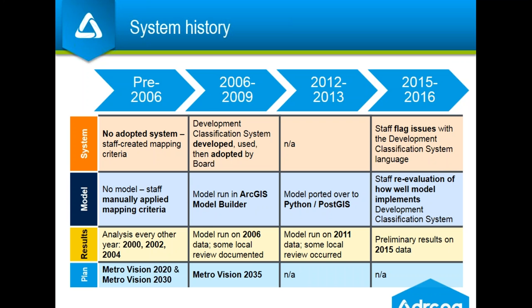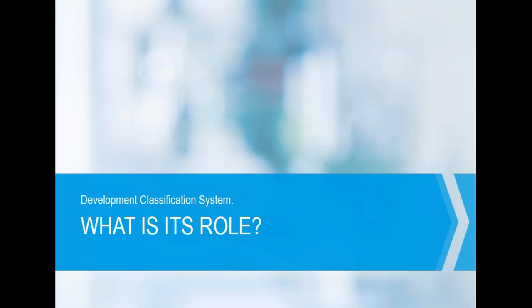Some also complained about the lag of having to wait for development to start going vertical before aerial imagery could capture it and then go through the human digitization process. That's what led to a new approach using parcel and subdivision data, which was used in the development of Metro Vision 2035 adopted in 2007. The board then officially incorporated this system into the Metro Vision Growth and Development Supplement in 2009. Most recently, DRCOG has taken a fresh look at the adopted language and reevaluated how well the computer model actually implements it, making significant improvements.